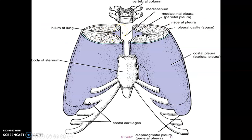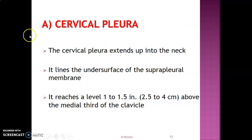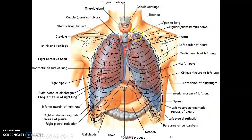The divisions of the parietal pleura are based on the region where they lie. Cervical pleura is on the upper portion; costal pleura neighbors the ribs; mediastinal pleura forms the lateral border of the mediastinum; and diaphragmatic pleura is found below the lungs. The cervical pleura extends up to the neck and lines the undersurface of the supra-pleural membrane, reaching one to 1.5 inches above the medial third of the clavicle.